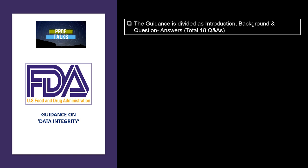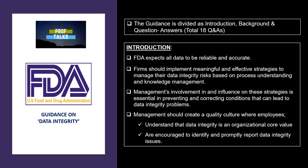The guidance is divided basically into three parts: first, the introduction; background; and there are a total of 18 questions and answers related to data integrity. In the introduction, FDA expects that all data should be reliable and accurate — it is where firms build trust with the regulatory authority. The firm should implement meaningful and effective strategies in managing the risk related to data integrity, and management's involvement and influence in these strategies is very important. Management should create a quality culture where employees understand that data integrity is a core value and are encouraged to identify and promptly report data integrity issues.